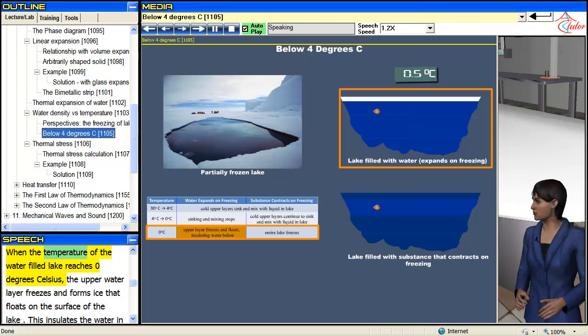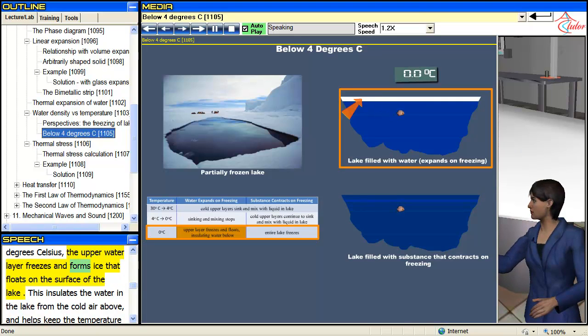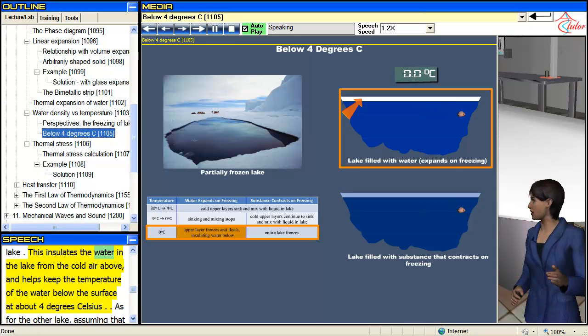When the temperature of the water filled lake reaches 0 degrees Celsius, the upper water layer freezes and forms ice that floats on the surface of the lake. This insulates the water in the lake from the cold air above and helps keep the temperature of the water below the surface at about 4 degrees Celsius.